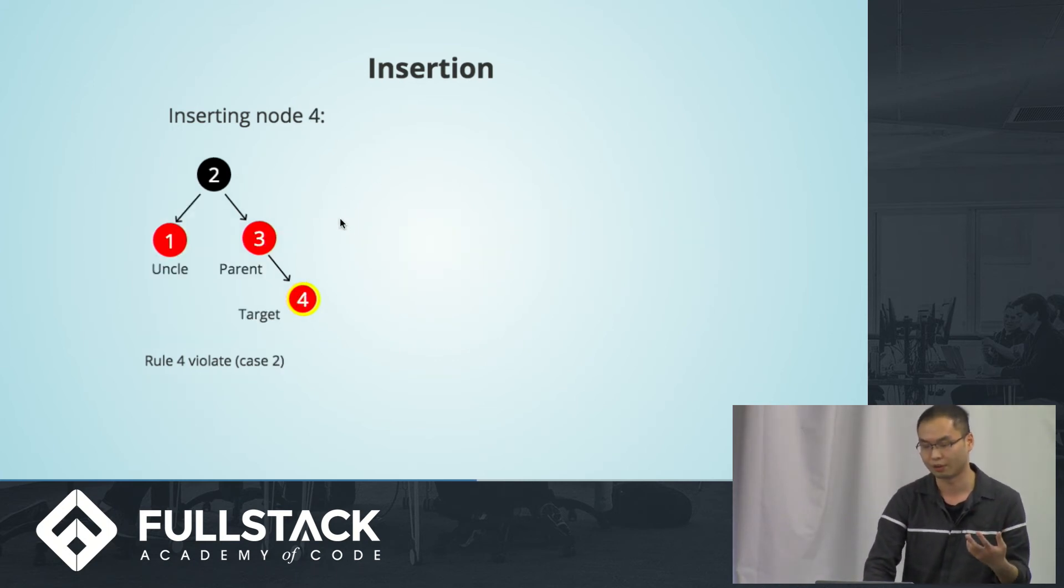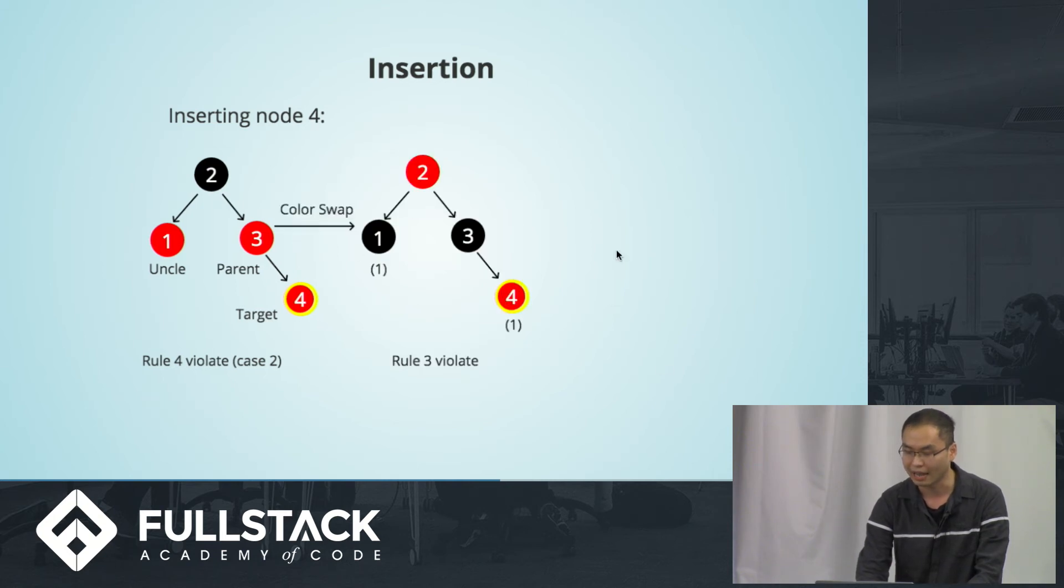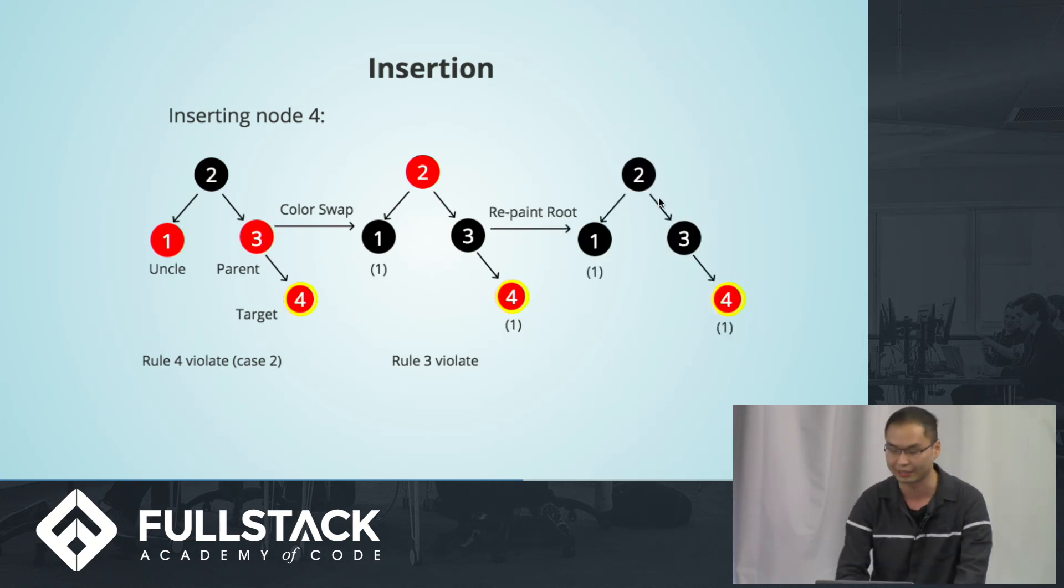Inserting node 4. Again, you've seen this pattern before. It's a case 2 invalid. What you need to do, just swap the color. And because root node needs to be black, also need to repaint the root node to be black. And then you have a valid red-black tree.